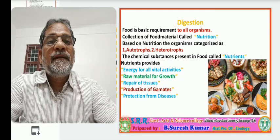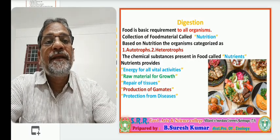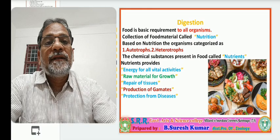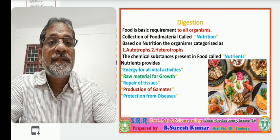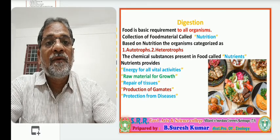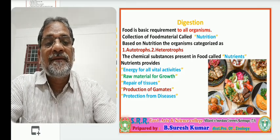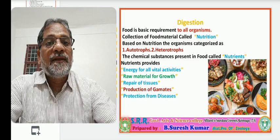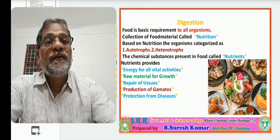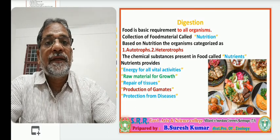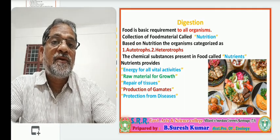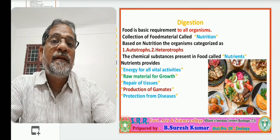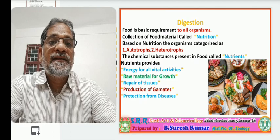The collection of food material by organisms is called nutrition. Based on mode of nutrition, organisms are categorized into two kinds: autotrophs and heterotrophs. Autotrophs — 'auto' means self — they can prepare their own food. Such organisms are termed autotrophs. Autotrophs can synthesize their food by the photosynthesis mechanism; they are called photo-autotrophs. Some are chemo-autotrophs, which synthesize their food by performing various biochemical reactions. For example, sulfur bacteria.